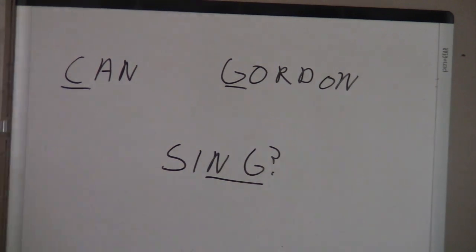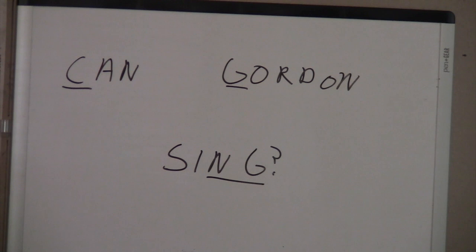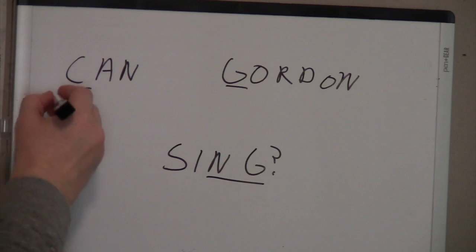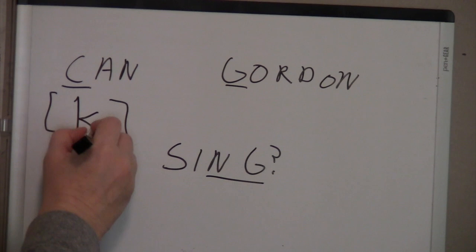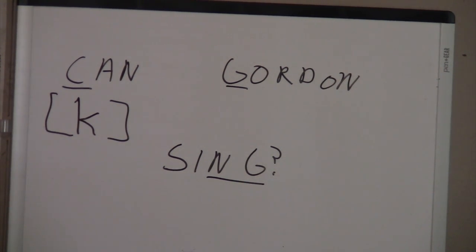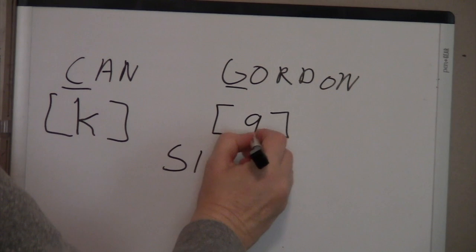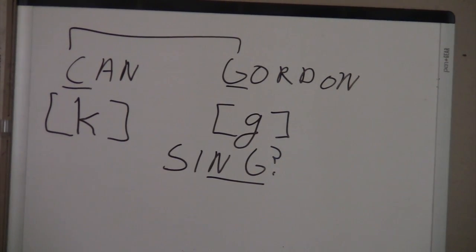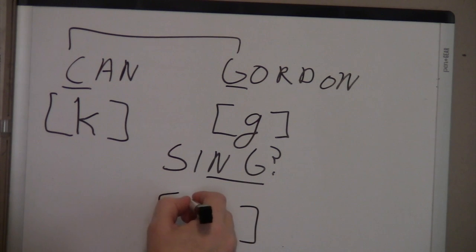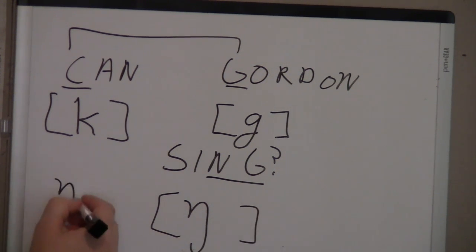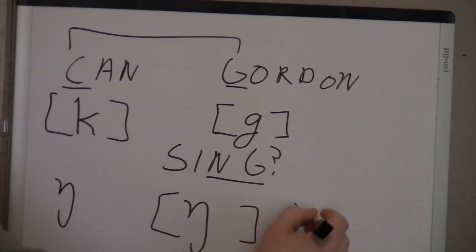Next are the consonant sounds made with the back of the tongue to the soft palate: kuh, guh, and the ng sound. The kuh sound, as in 'can,' is always transcribed with a lowercase k, regardless of spelling — even when spelled with a c. Its voiced cognate, guh, is a lowercase g. These are cognates: kuh and guh. The ng sound, as in 'sing,' is a new symbol — you start with an n and loop up to make a little g.